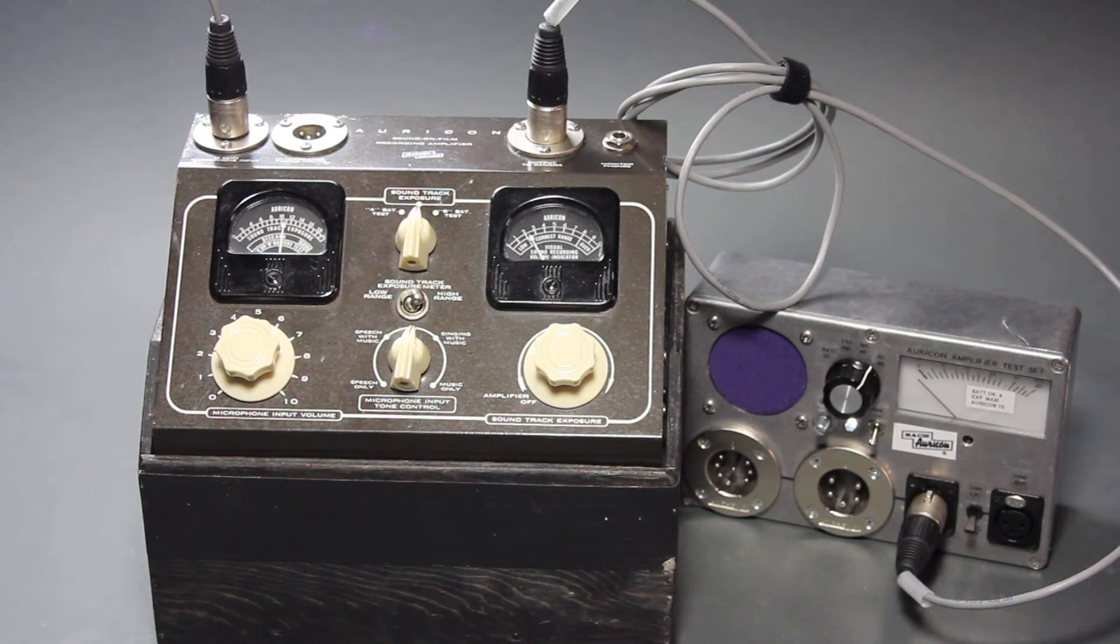Hi everybody. Today I'd like to show you an Auricon RA31 amplifier. These were used back in the 50s and 60s to record optical soundtracks on 16mm film, along with the optical sound recording camera.